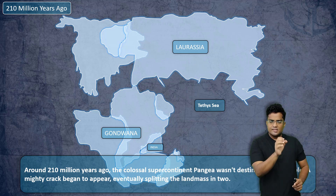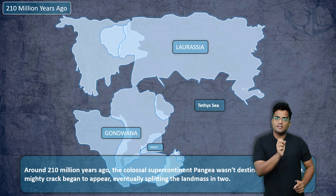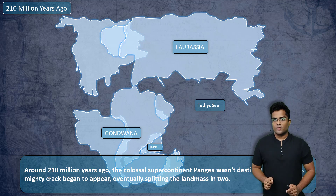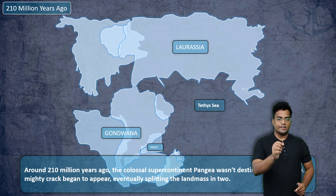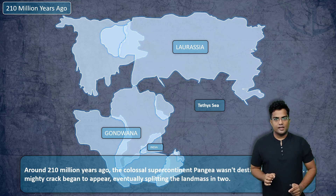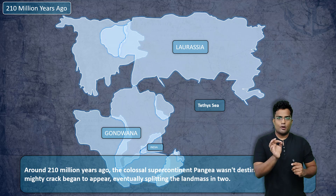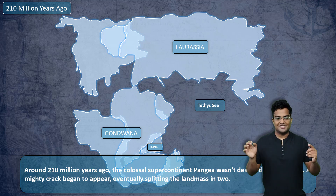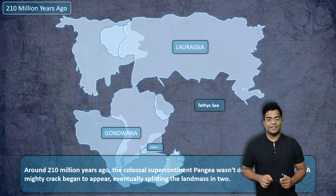The Panthalasa sea was replaced by another sea called the Tethys Sea. As you can see, there is a Tethys Sea now between Laurasia and Gondwana. There are many different ways to pronounce that word — Tethys — but we'll go with Tethys.